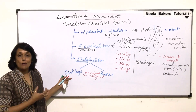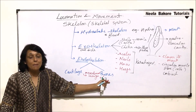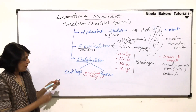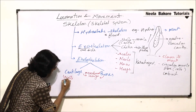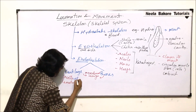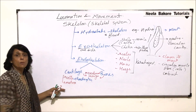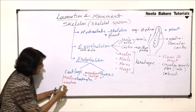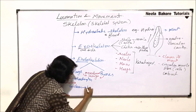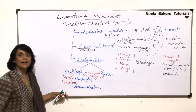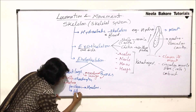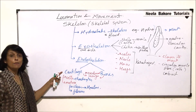Cartilage is a softer endoskeleton, while bone has a hard matrix. Cartilage is made up of two parts: cells and the matrix. The cells are known as chondrocytes. Depending on what is in the matrix, there are three types of cartilage. If the matrix is clear — without any fiber — the cartilage is known as hyaline cartilage, which is more or less transparent. If it has fibers, it is called fibrous cartilage.